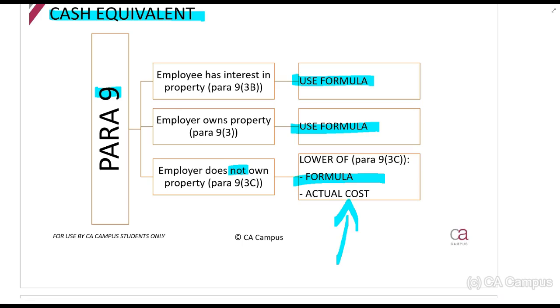The formula is the most important. Let's look at different situations. Situation 1: The employee has an interest in the property - you must use the formula. What does this mean? For example, your employer gives you a flat to stay in for free but also says you have the option in two years to buy this property. Or you own the property, you rent it to your employer, and your employer then tells you to stay in it for free.